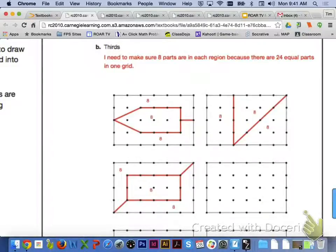For thirds, you need to make sure that eight parts are in each region, because there are 24 equal parts in one grid.